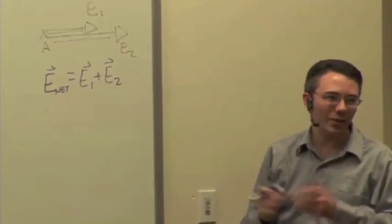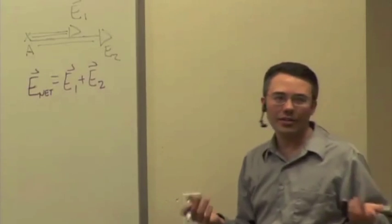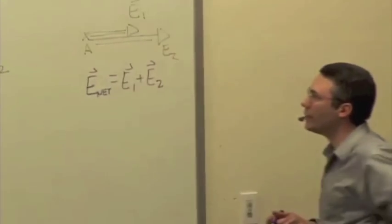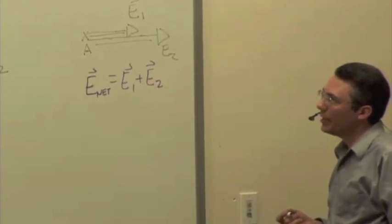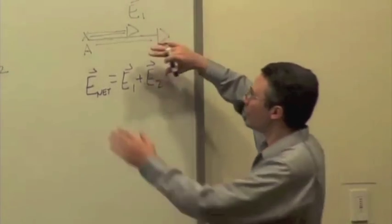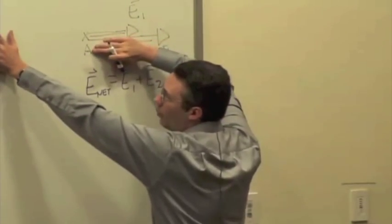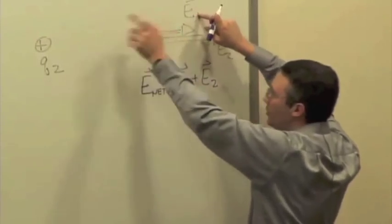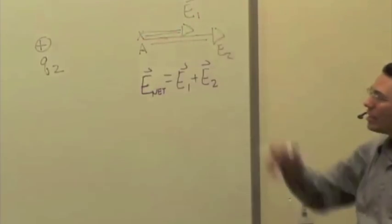And the key idea is that the presence of the second charge doesn't somehow change the electric field due to charge number one. It's still in some sense there. It's just that I've got to add it to the electric field due to charge number two. So when you're doing superposition, you can essentially ignore each charge and find the electric field due to just that single charge and then add them all up later.